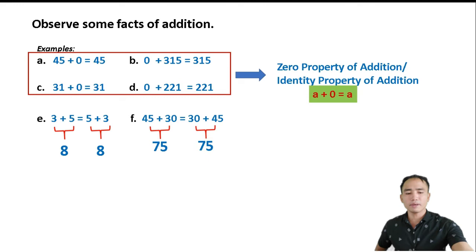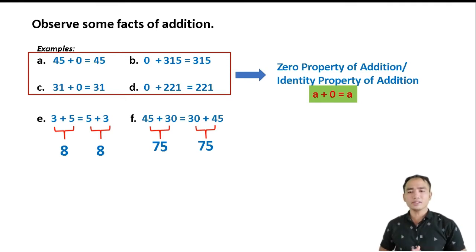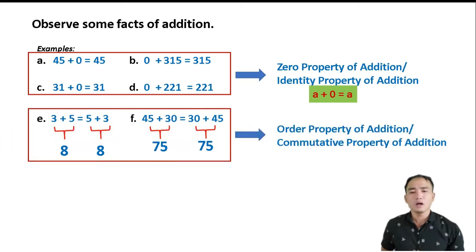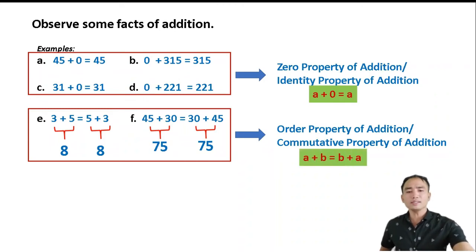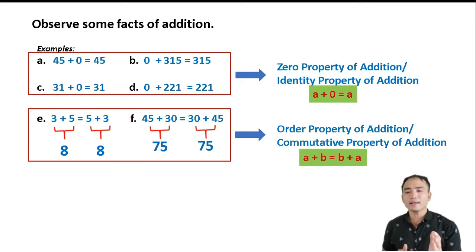The concept here is that the order of the numbers does not affect or change the answer. This property is called the Order Property of Addition, or the Commutative Property of Addition. It is written as a plus b equals b plus a. In this property, the order will not affect the answer.